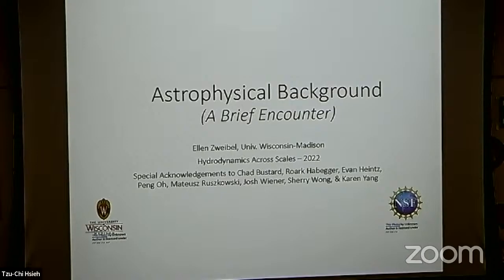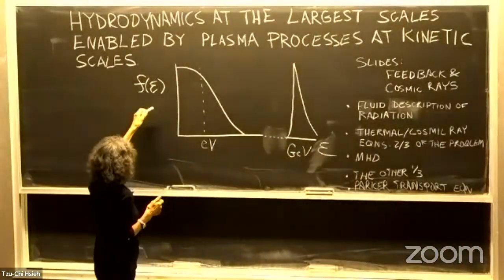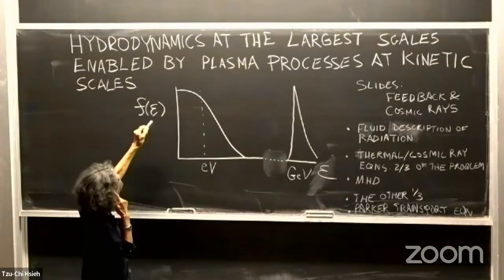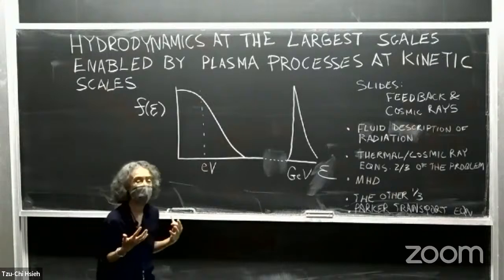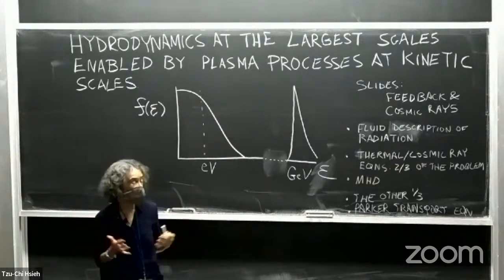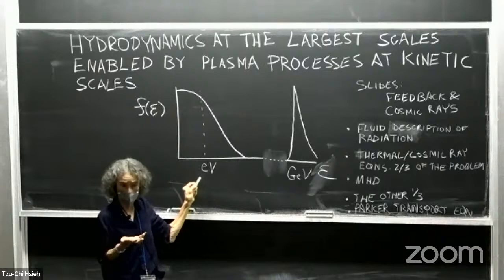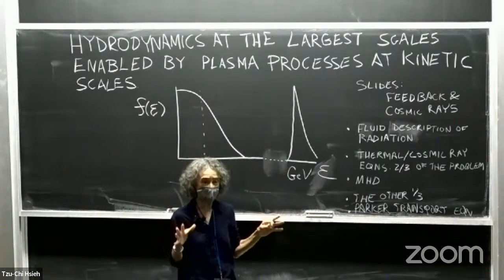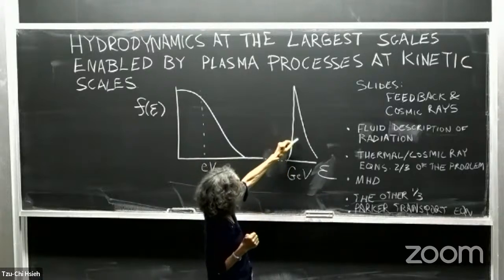So the situation that I want to focus on is illustrated in this kind of flawed sketch here. This is the distribution function in energy. So a number of particles per energy as a function of energy for the diffuse interstellar gas in our galaxy. So it's a nice Maxwell-Boltzmann distribution with a mean energy around one electron volt, which is about 10 to the 4 Kelvin. But then there's this tail here, which exists in complete defiance of thermodynamics. From a thermodynamic point of view, it should not be here.